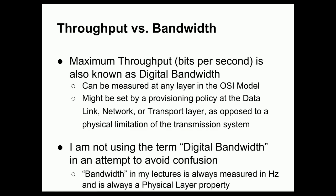So there is a term that is also used to describe maximum throughput, and that term is digital bandwidth. It's measured in bits per second, measured at any layer in the OSI model, and it's kind of a weasel word because the bandwidth, meaning digital bandwidth, of a networking system could actually be set by a provisioning policy at the data link, network, or transport layer, and it might not be a physical limitation of the actual transmission system. In order to avoid confusion though, I'm not going to use the term digital bandwidth. I'm instead going to say maximum throughput. And in my lectures, the word bandwidth is always referring to a physical layer property, and it is always a unit that is expressed in Hertz. I am using the analog signal processing definition of bandwidth.